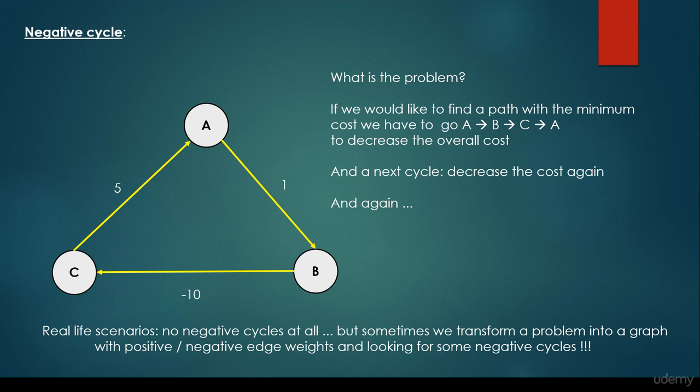Because in order to go from A to B it takes 1 unit. In order to go from B to C it takes minus 10 units. In order to go from C to A it takes 5 units. So the overall cost will be smaller than zero, which means that if we make several of these cycles, we are going to decrease the overall cost.